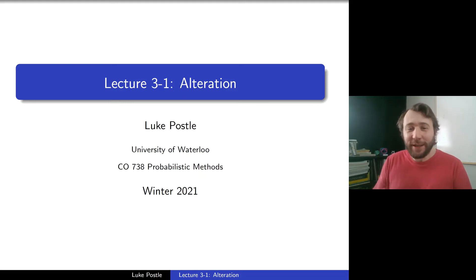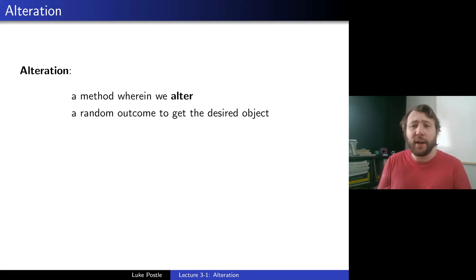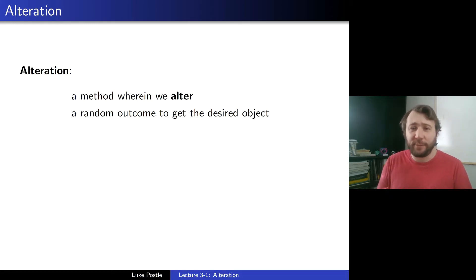Hello and welcome to CO738 Probabilistic Methods. Today we'll be discussing alteration. Alteration is a method wherein we alter a random outcome to get the desired object. So we take a random procedure, but we're altering this random outcome to get the desired object. Today we'll be discussing a few examples that use alteration.